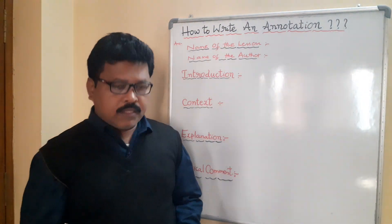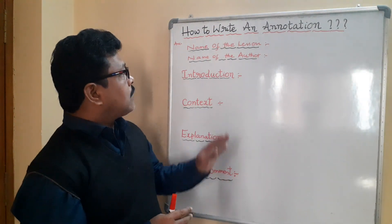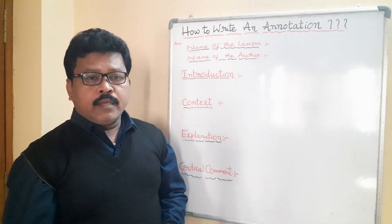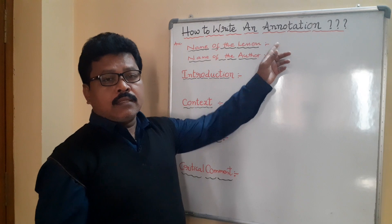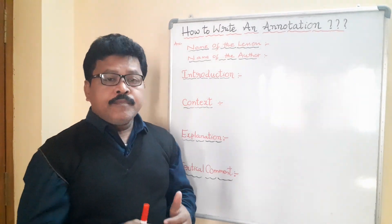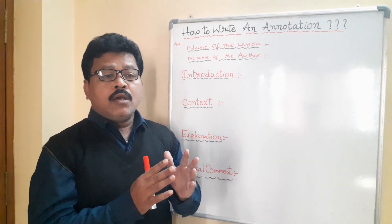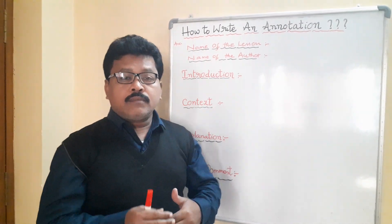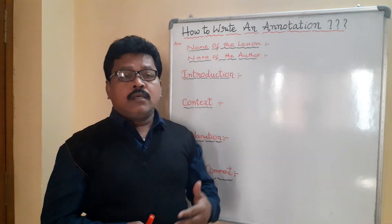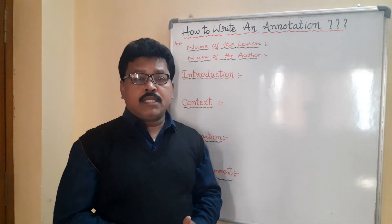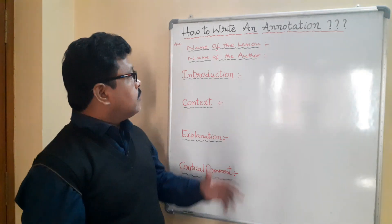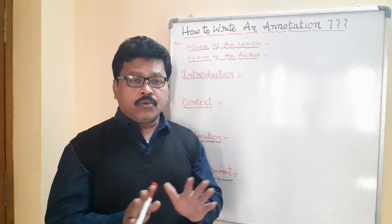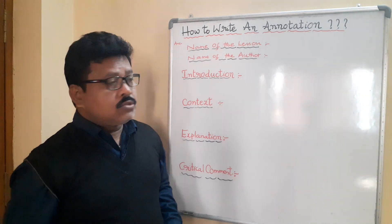Welcome back to my channel. In this video we are going to learn how to write an annotation. This is an important question for intermediate first year and second year students in both TS and AP states. Annotations are there from prose and poetry. Annotation means explanation of something — a few lines are taken from your prose and poetry lessons and given in the examination. We have to find out from which lesson it is taken, who the writer is, what the context is, what the background is, and what the explanation is. This comes from only prose and poetry, not from non-detail short stories.